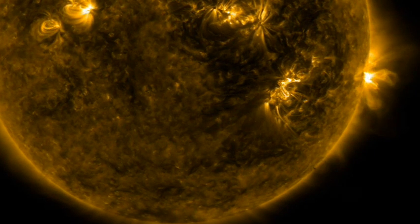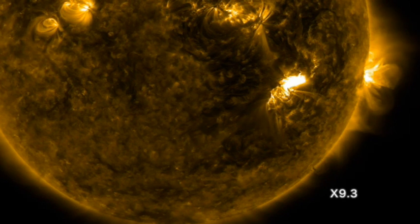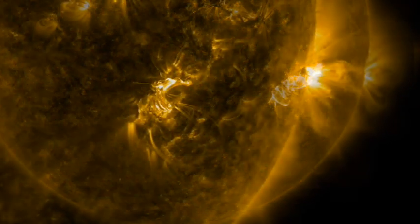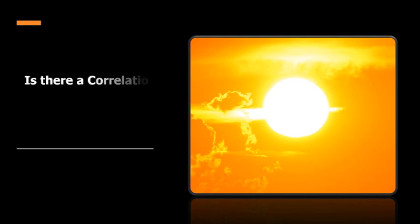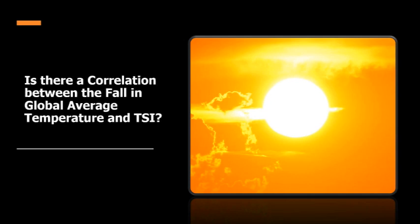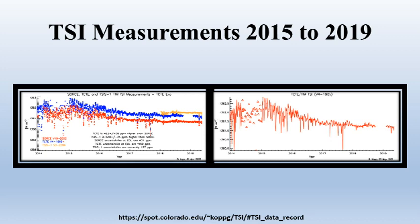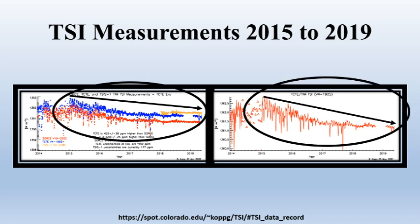The planet Earth gets practically all of its energy from the Sun. In fact, the energy received from the Sun exceeds the next largest energy source by nearly 10 to the power of 4. Is there a correlation between the falling global average temperature and the TSI measurements? There are various instruments and projects that measure TSI. These two charts combine the various measurements, and they all show a drop in the amount of energy received by the Earth from the Sun since 2015.